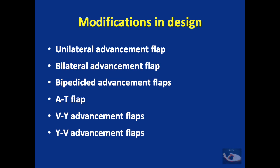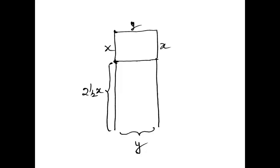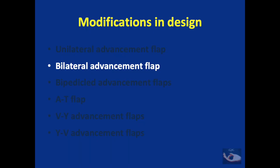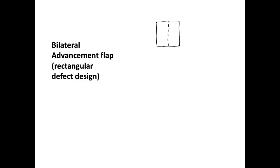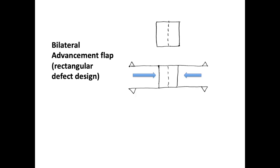We shall now see a broad classification of advancement flaps. This classification is based mainly on the alterations in design of the advancement flap. We have seen the classical unilateral advancement flap and its design. This unilateral flap when done from two directions becomes the bilateral advancement flap. The design of the bilateral advancement flap can be for a square defect — the defect is made square and divided into two equal-sized rectangles.